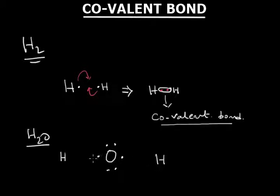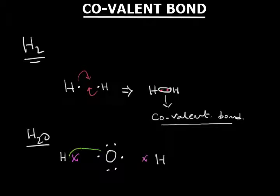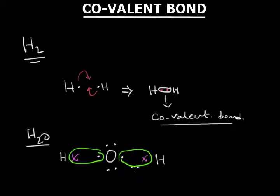Along with oxygen, the electrons of hydrogen are donated. Hydrogen needs to get two electrons in its outermost shell, so an electron pair is formed between hydrogen and oxygen. As a result, each hydrogen atom gets two electrons and each oxygen gets eight electrons in its outermost shell, and two covalent bonds are formed by oxygen and one covalent bond is formed by each hydrogen.